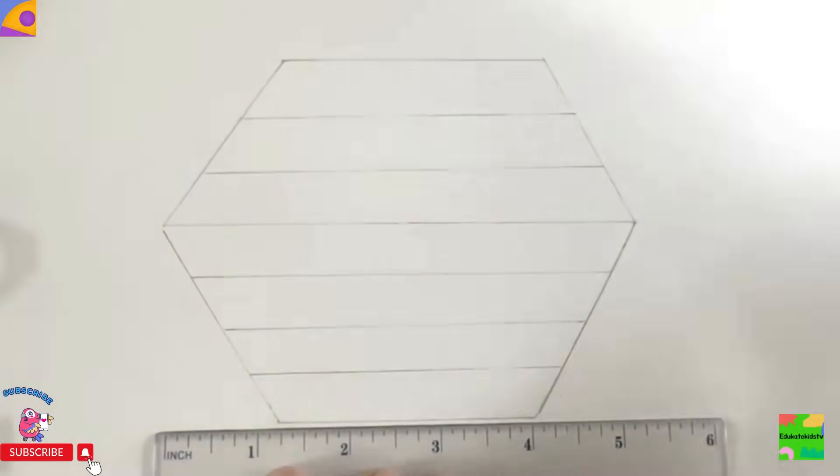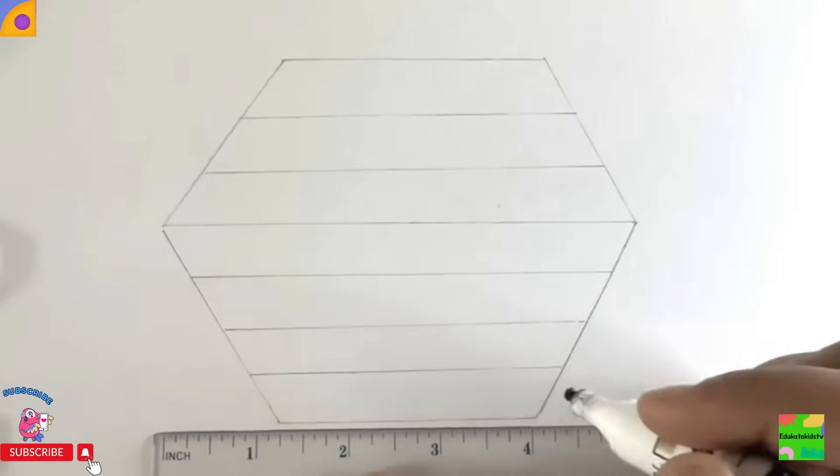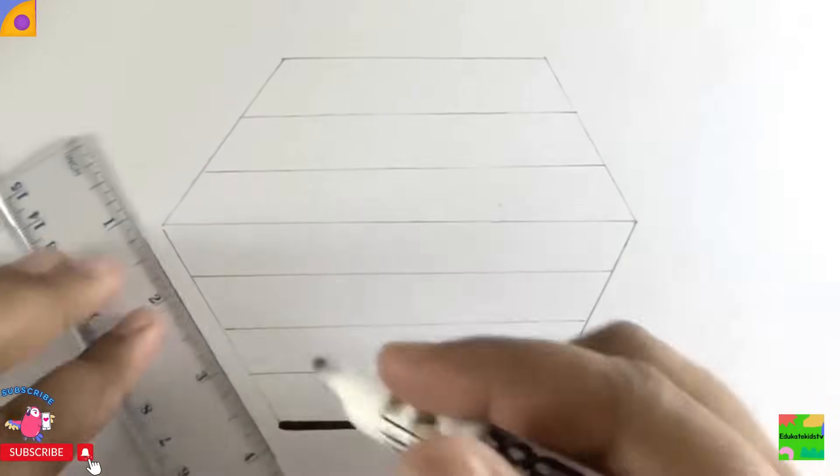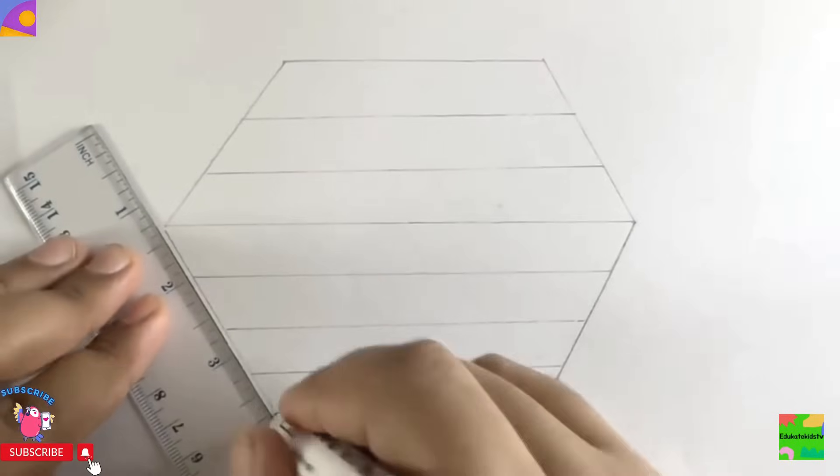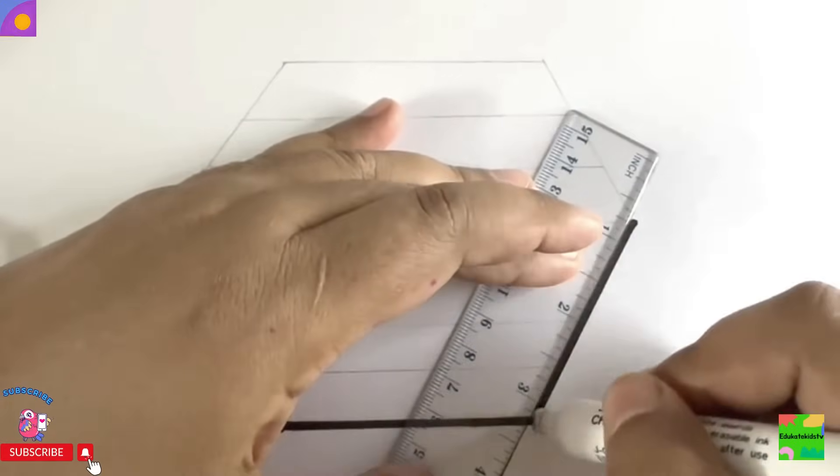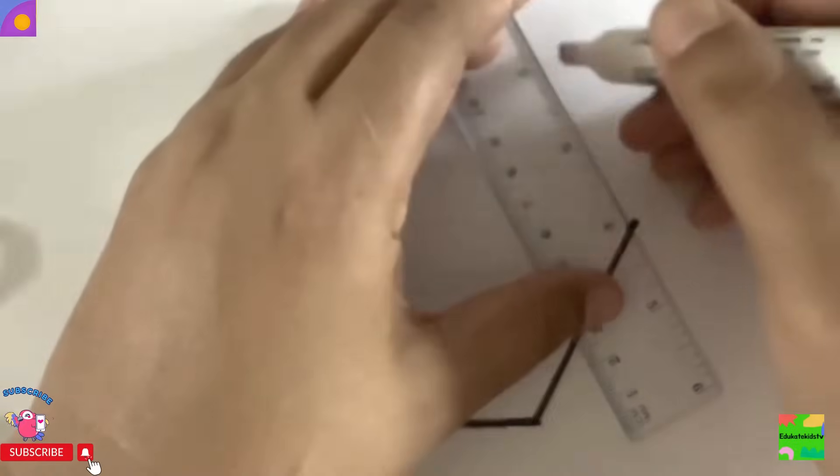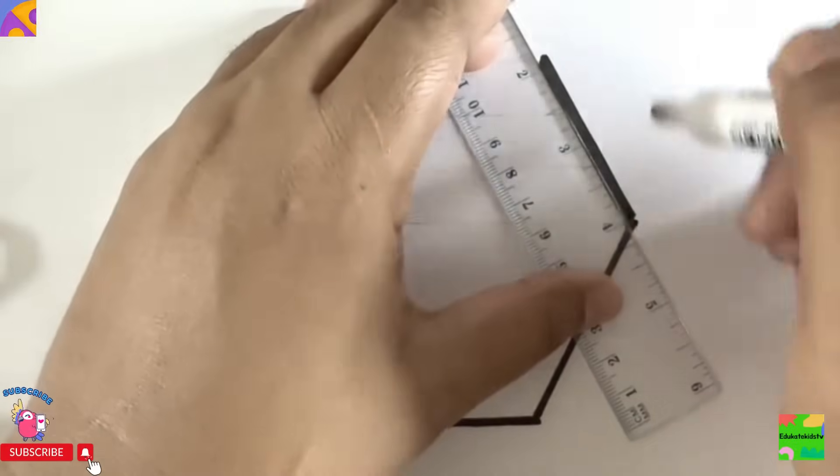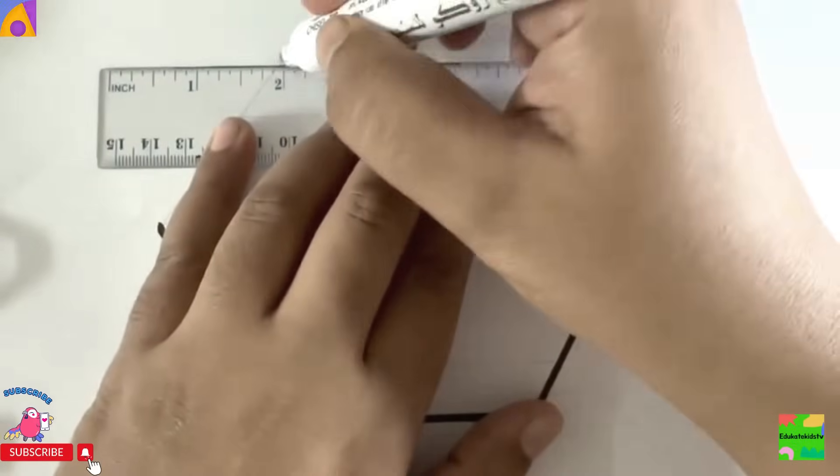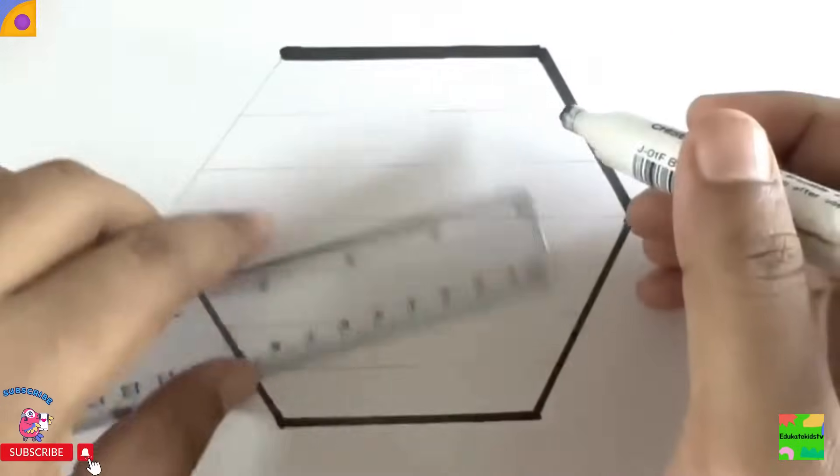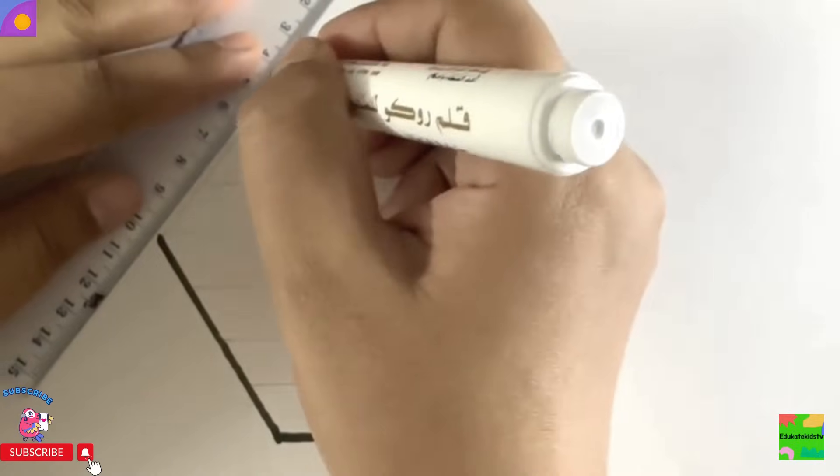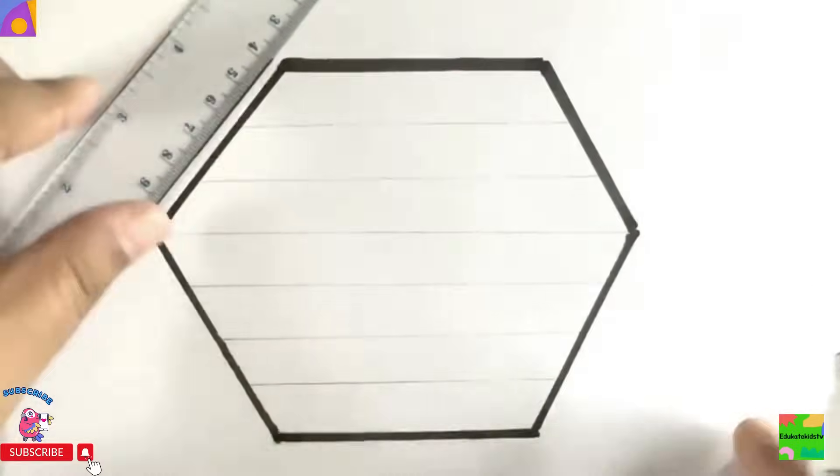This is my black marker and ruler. Let's start drawing hexagon. Hooray! Wow! Nice! Isn't it? Hooray! A hexagon.